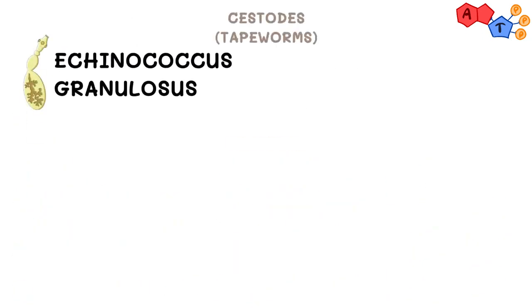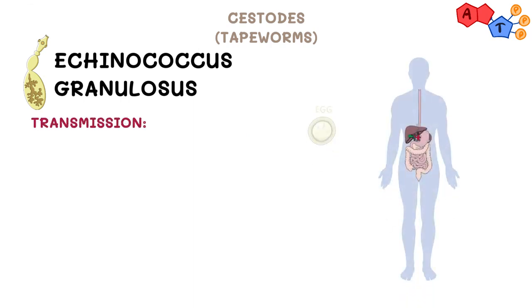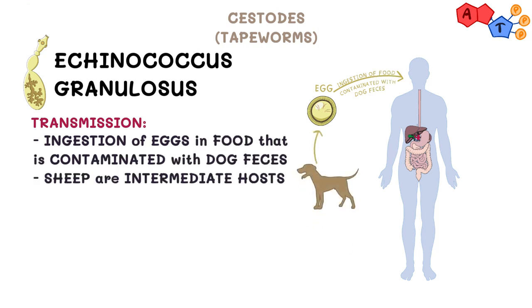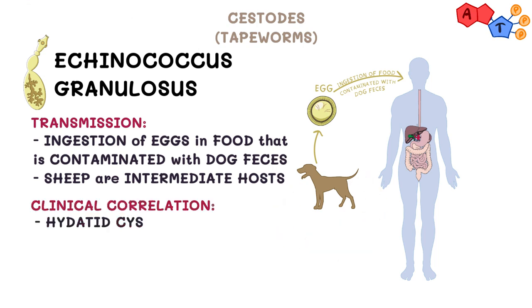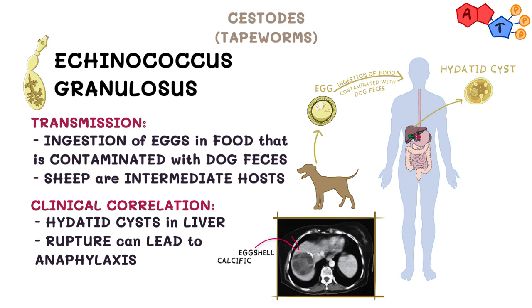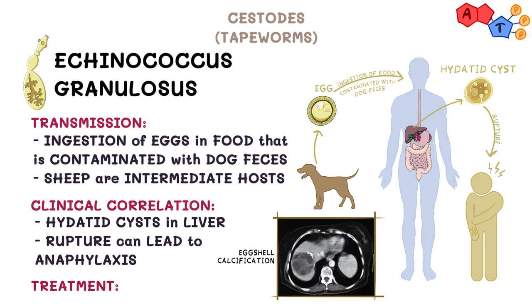The last tapeworm we're going to talk about is Echinococcus granulosus. It is transmitted to humans by ingestion of eggs in food contaminated with dog feces. It's also worth knowing that sheep are intermediate hosts. Echinococcus granulosus can lead to the formation of hydatid cysts in the liver, which are described to have eggshell calcification and are usually detected on CT scan. The contents of the cysts can lead to anaphylaxis if the cyst ruptures. For treatment, we use albendazole.